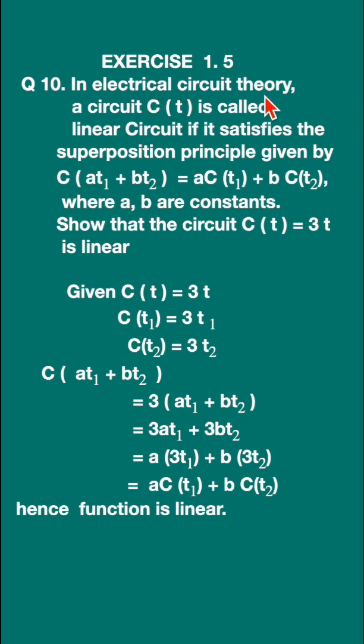In electrical circuit theory, a circuit C(t) is called linear circuit if it satisfies the superposition principle given by C(at₁ + bt₂) = aC(t₁) + bC(t₂), where a, b are constants. Show that the circuit C(t) = 3t is linear.